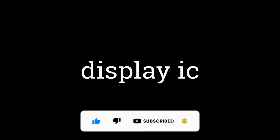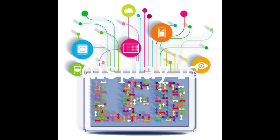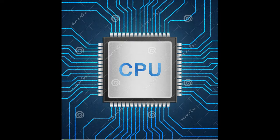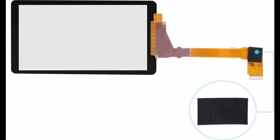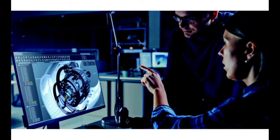Display or Graphic IC is an integrated chip that provides an interface between a microprocessor, MPU or microcontroller, MCU, system, and a liquid crystal display, LCD. The image that you are seeing on a mobile screen is handled by the Display IC.